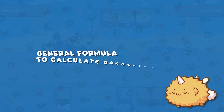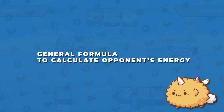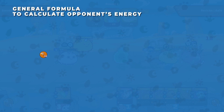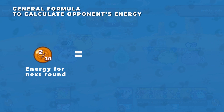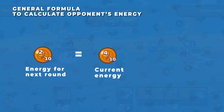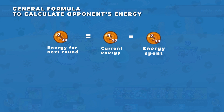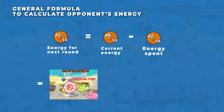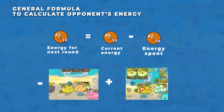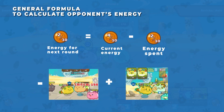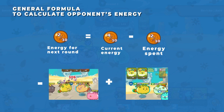Here's the general formula that you can use to calculate your opponent's energy. Energy for the next round equals current energy minus energy spent, minus energy stolen or destroyed by you (if any), plus energy gained or stolen by them, plus 2.